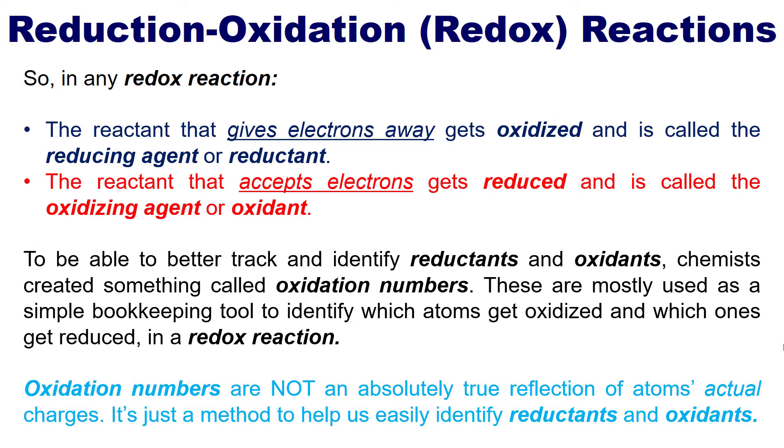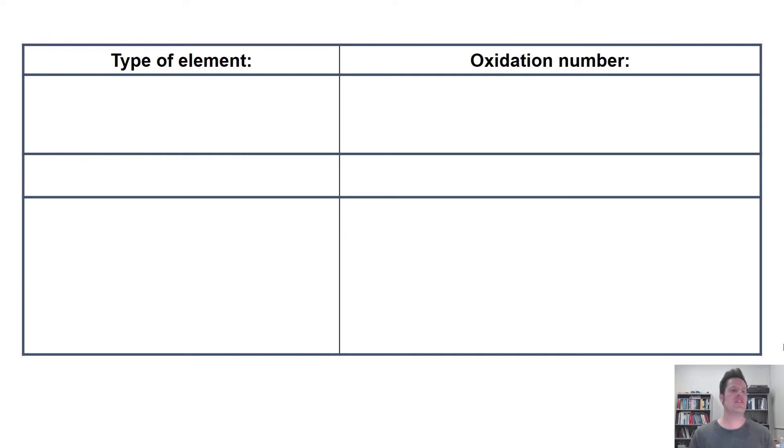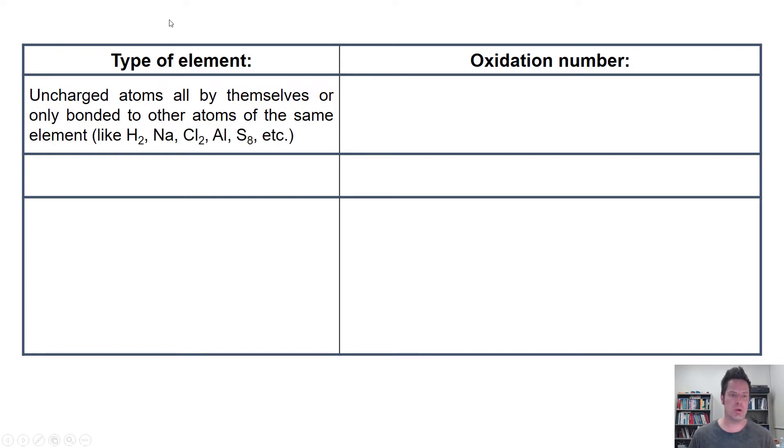Oxidation numbers are not an absolutely true real-world reflection of atoms' actual charges. It's just a method or tool to help us easily identify reductants and oxidants. With that said, here is that tool that you should commit to memory. If you see any uncharged atom all by itself in a chemical formula, or atoms that are of the exact same element all bonded to each other in a molecule, such as H2, neutral sodium, chlorine Cl2, aluminum, or S8, the oxidation number for every atom in them is zero.